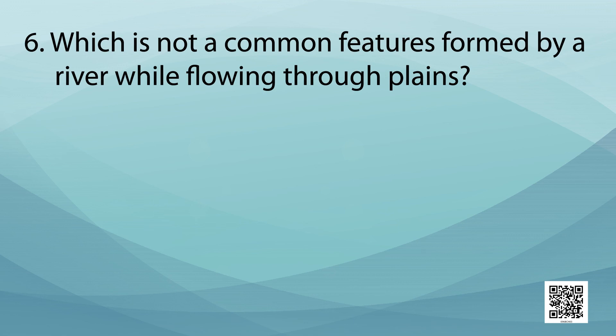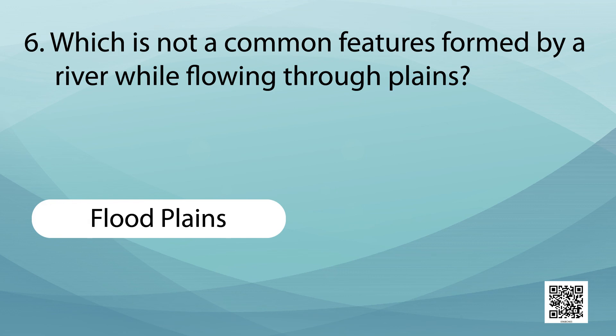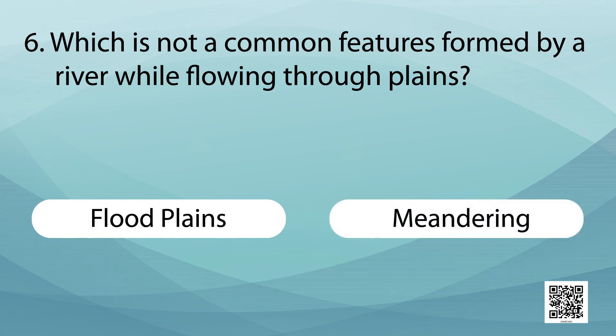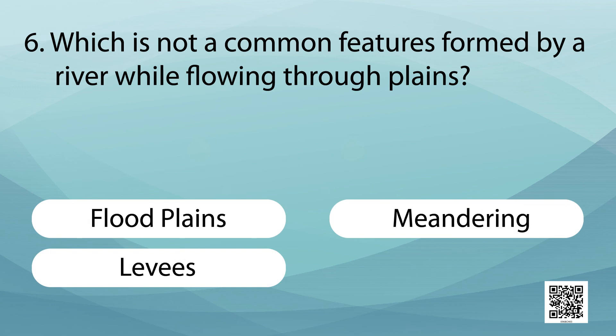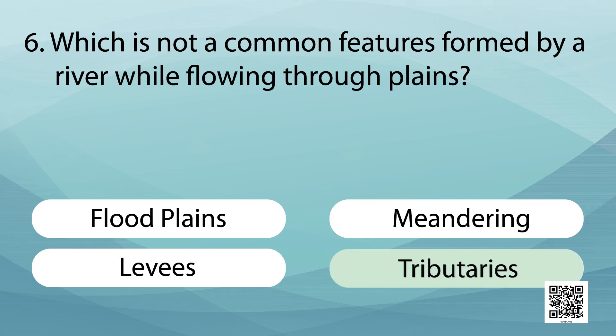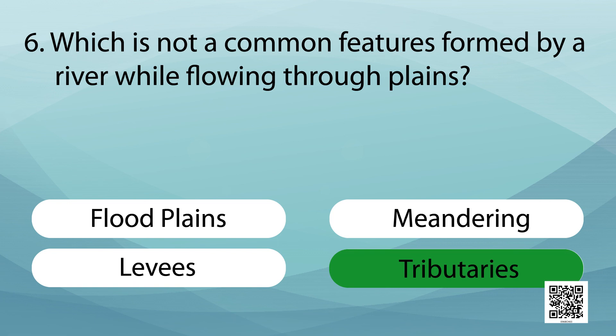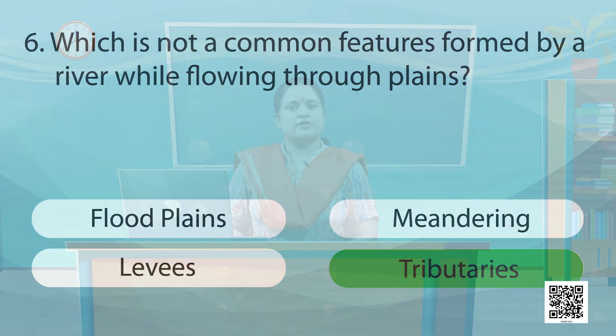Which is not a common feature formed by a river while flowing through plains? The options are flood plains, meandering, levees, or tributaries. The correct answer is tributaries — they are not a common feature formed by a river while flowing through the plains. Rivers are the lifeline of humans and a gift of nature which we should all take care of.